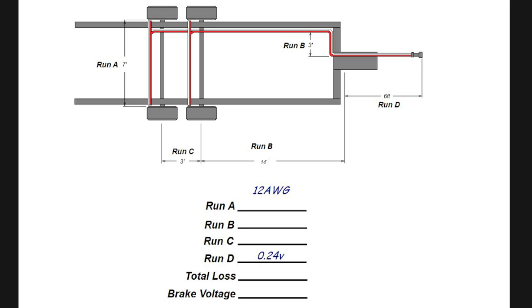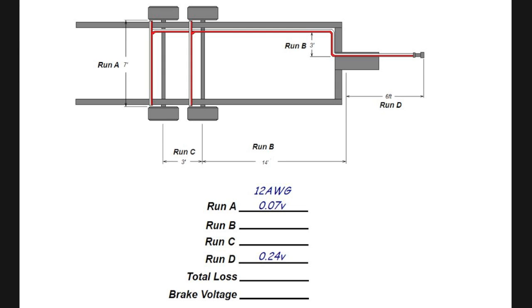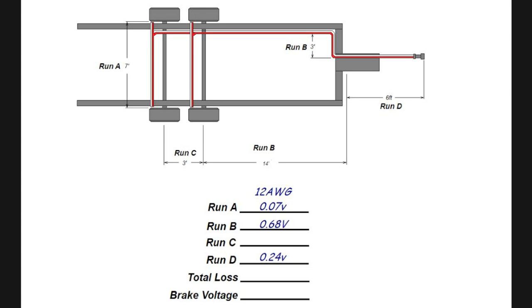So we enter those figures into our sheet. And now we continue on with run A. Now what's interesting is that there's actually two run A's, one for each axle. However, we do not have to add them together, because run A for the front axle is 3 amps, and run A for the rear axle is 3 amps. We only have to add one of them, because remember, we're looking for the brake voltage for the brakes at the end of the run. Next is run B. Run B is 12 amps. Also notice that run B is a 14-foot segment and a 3-foot segment, so we have to use 17-foot total.